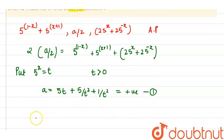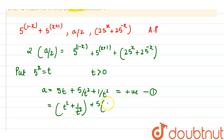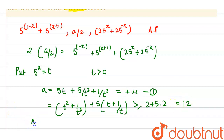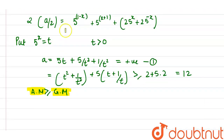Simplifying further, a equals t² plus 1/t² plus 5(t + 1/t). By the AM-GM inequality — arithmetic mean is always greater than or equal to geometric mean — t² + 1/t² is greater than or equal to 2, and 5(t + 1/t) is greater than or equal to 5×2 = 10. Therefore a is greater than or equal to 12.